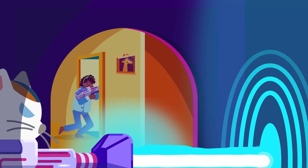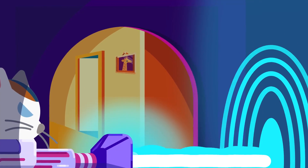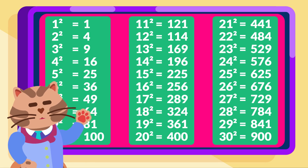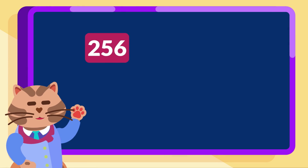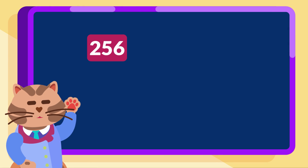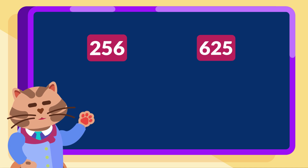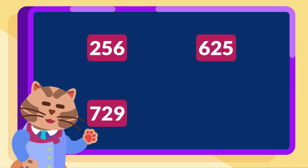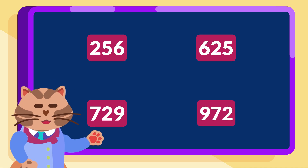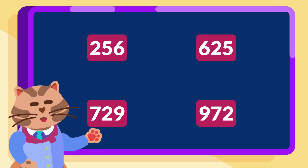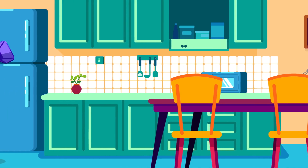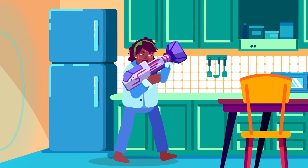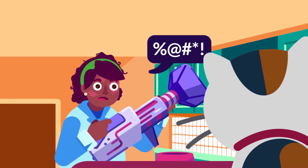Now let's put your knowledge to the test. Can you quickly determine if the following numbers are perfect squares? 256, 625, 729, 972. Rely on the patterns we discussed earlier. Leave your answers in the comments below.